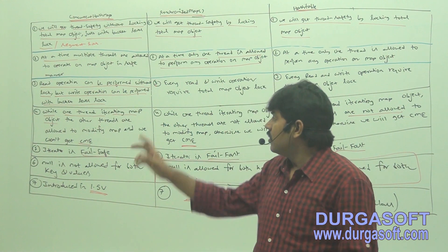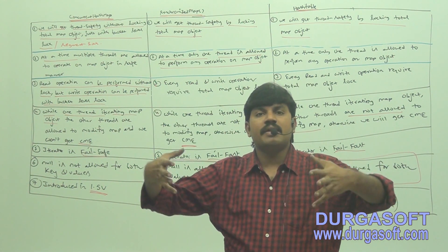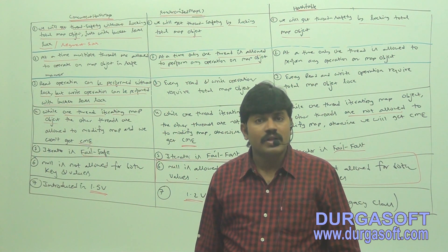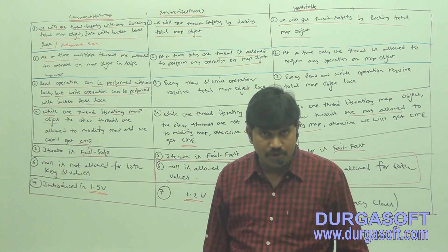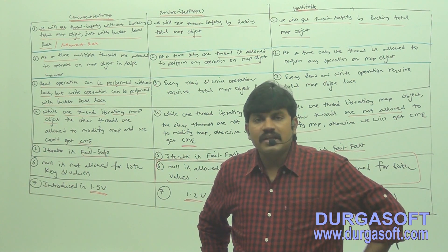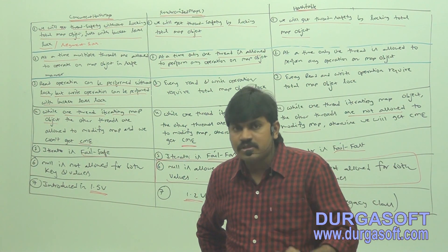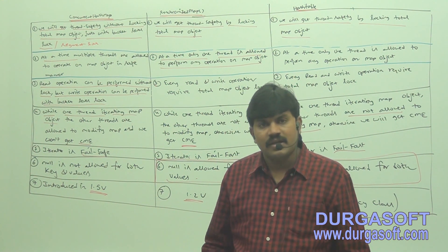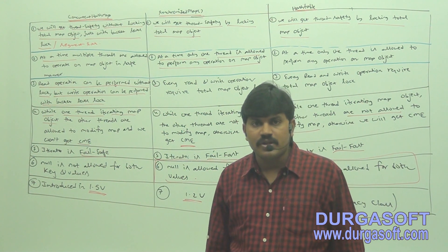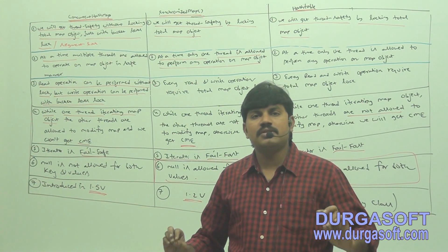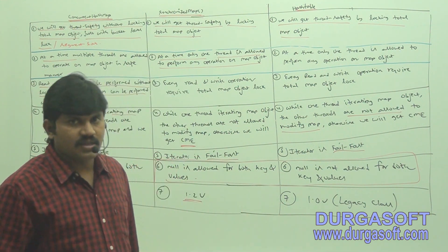So why is this question very important? All three are thread-safe, but the way thread safety is achieved and the behavior differs. Based on that, you may be asked this question in interviews. Now you understand the differences: ConcurrentHashMap vs HashTable, ConcurrentHashMap vs SynchronizedMap. That's all about ConcurrentHashMap.